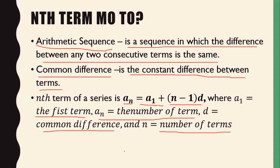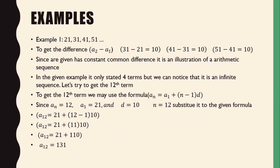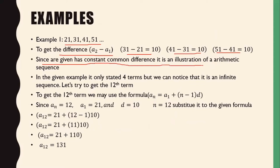So let's have an example. For number 1, we have 21, 31, 41, and 51. To get the difference, subtract the second term from the first term: 31 minus 21 equals 10; 41 minus 31 equals 10; 51 minus 41 equals 10. So the common difference is 10. Since our given has a constant common difference, it is an illustration of an arithmetic sequence.